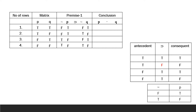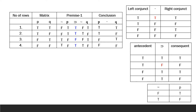We negate P's and Q's values and use those negative values to solve the implication. The horseshoe (implication) is false only when the antecedent is true and the consequent is false; in all other cases it is true. We then solve the conclusion. The conjunction P dot Q is true when both are true, and false when at least one is false, so only the first row gives true.